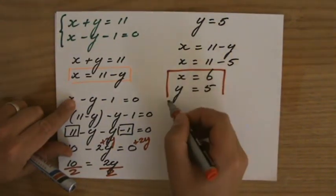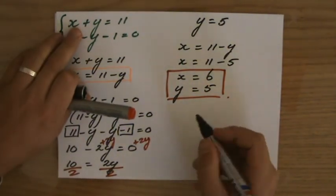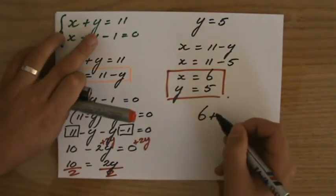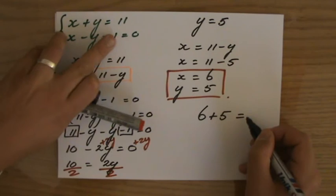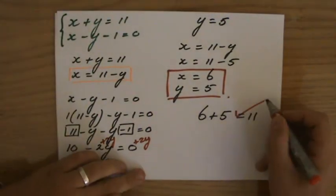Then, both equations are correct. Now, I always check that to be sure. x plus y. 6 plus 5 is 11. It is 11. Fantastic.